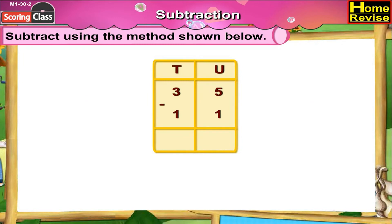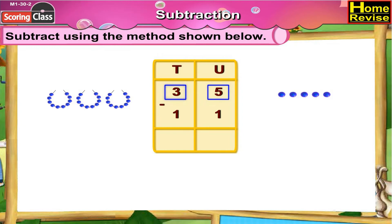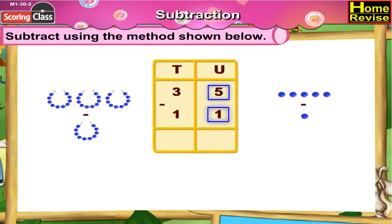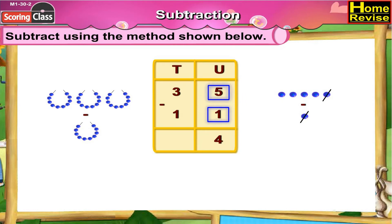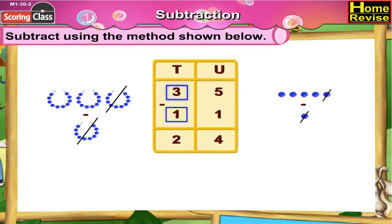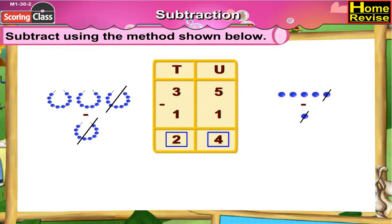35 minus 11. If you arrange them under tens and units, it is 3 tens 5 units minus 1 ten 1 unit. Now the units column: 5 minus 1 is 4. Tens column: 3 minus 1 is 2. So it is 2 tens 4 units. 35 minus 11 is 24.